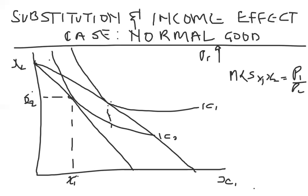As a result of the falling price, consumption of x1 has moved up to a new point — I'll call this x1 new, and the original x1 zero. This represents the total effect of the change in price on x1. Now I'm going to decompose this effect into the substitution and income effects.